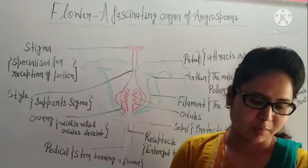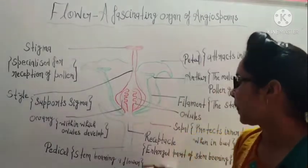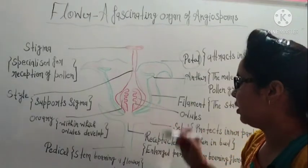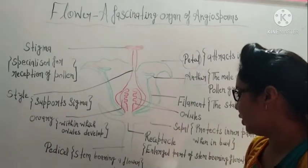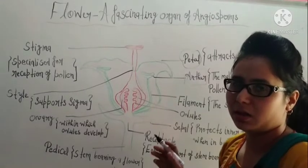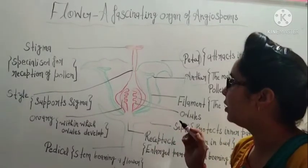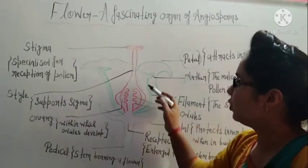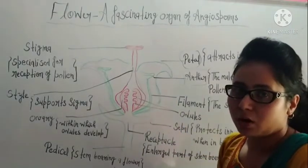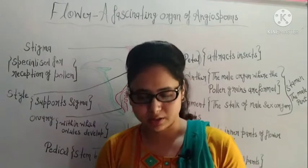Now you will also see the diagram — this is a typical flower diagram, and it is a longitudinal section of a typical flower. When you cut a flower and make a longitudinal section, the internal portion is shown. When you take a flower, what do you see in it?